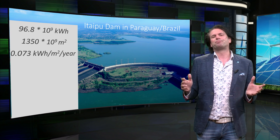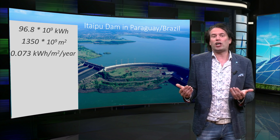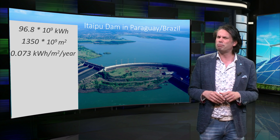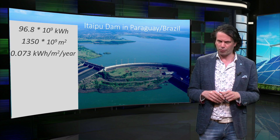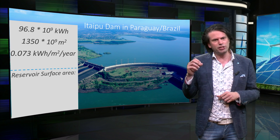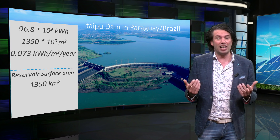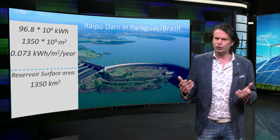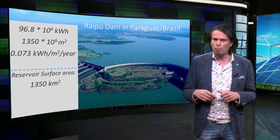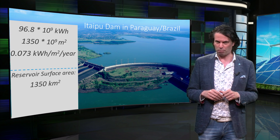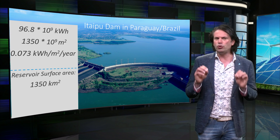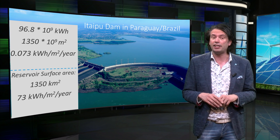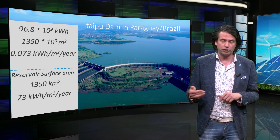However, we can also take the reservoir surface area of 1350 square kilometers as a measure for the required land. This gives a good indication of the amount of land that is sacrificed for the hydropower plant and is often used when comparing the impact of hydropower plants. When we do this, we get a higher energy density of 73 kWh per square meter per year.